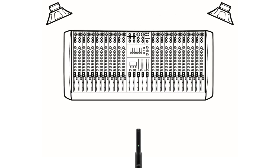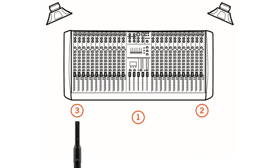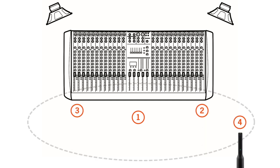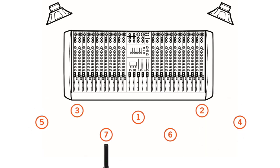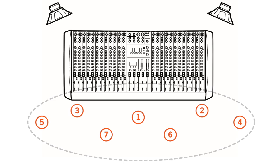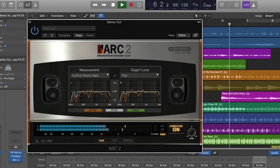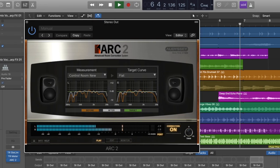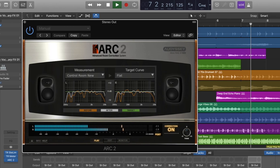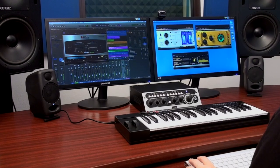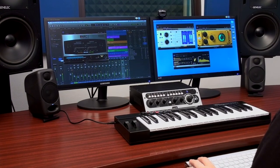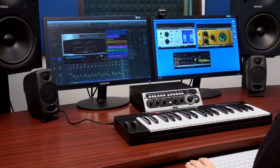The advanced room correction system works by easily measuring the room in as few as seven positions to produce an accurate representation of its acoustic response. Then it generates a filter correction that runs in a plug-in that works with most digital audio workstations to make the response linear.